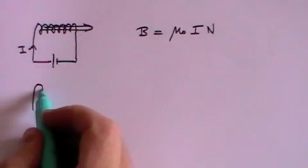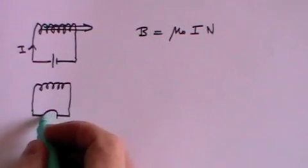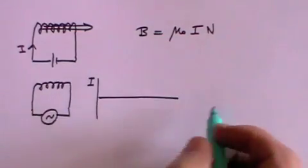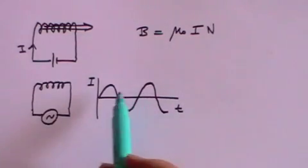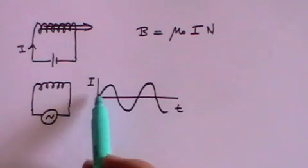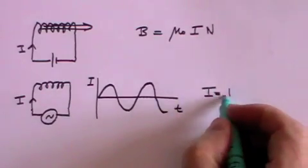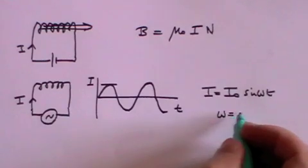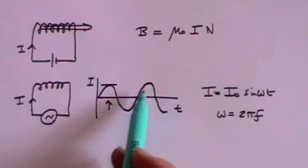If on the other hand you have exactly the same set-up, but this time instead of using a battery to generate a direct unchanging current, you have an alternating current source, then the current plotted against time will almost certainly be a sine wave. The value of the current at any point in time is constantly going up and down in a sine wave form — I equals I-nought times sine omega-t, where omega is 2 pi f, and f is the frequency, the number of crests passing a point per second. So you have a varying current.